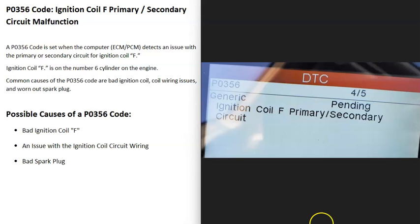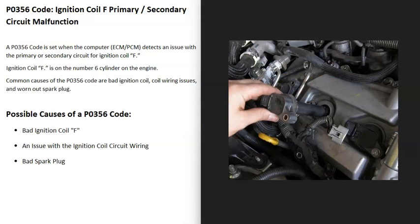What are some possible causes of a P0356 code? The first thing is that the ignition coil has gone bad and needs to be replaced. There are different ways to test that coil. Sometimes these coils are easy to access, and you can swap it out with another cylinder that is working.